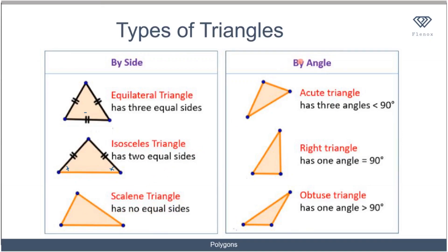Classifying triangles by angles: an acute triangle is one in which all three angles are less than 90 degrees. A right triangle is one in which one angle is exactly 90 degrees — that angle is called the right angle. An obtuse triangle is one in which one angle is greater than 90 degrees.